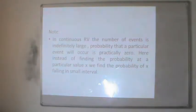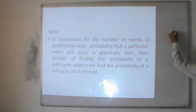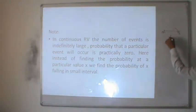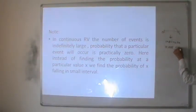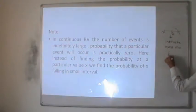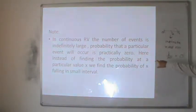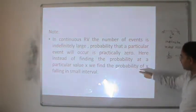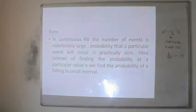An important note related to continuous random variables: in the case of a continuous random variable, the number of events is indefinitely large because in any interval — such as 0 to 1 — there exist infinitely many numbers. The probability that a particular value, like 1/2, occurs is 1 divided by infinity, which is practically equal to zero. So instead of finding the probability at a particular value of x, we find the probability of x only in a small interval.